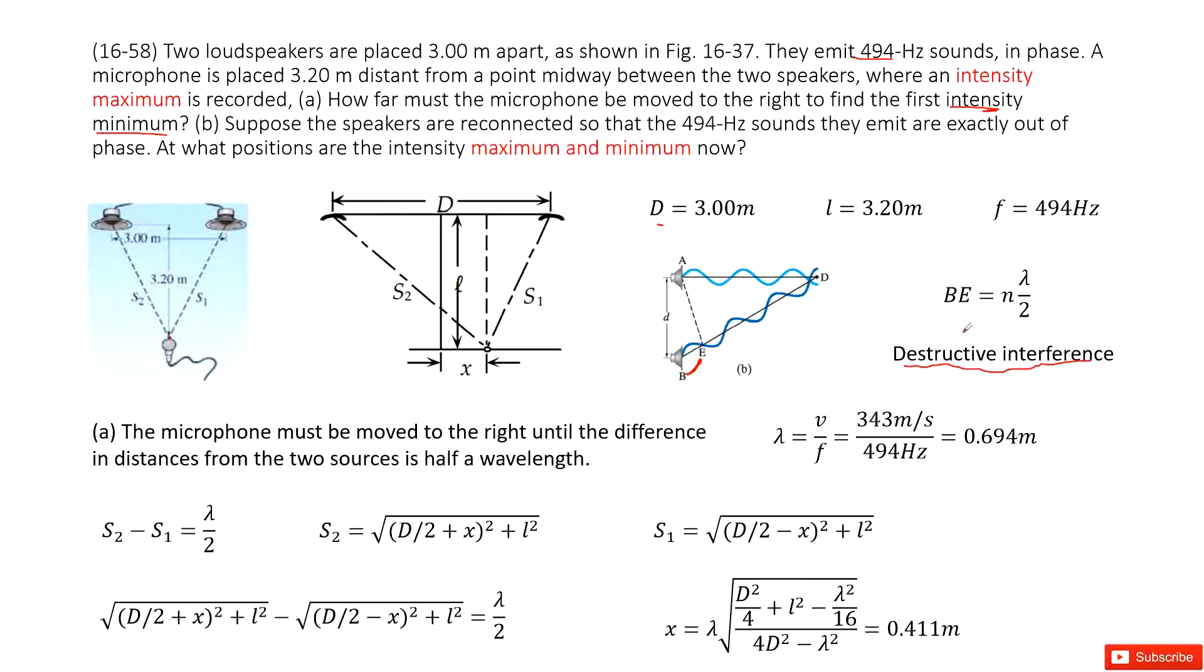So we need to find how fast it moves. So that means the intensity minimum is a destructive interference. So we need to make sure BE is just equal to n times lambda divided by 2. This is we learned in our textbook.